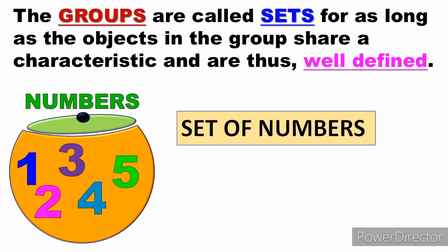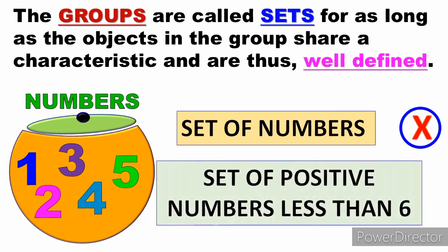For example, 'set of numbers' is not well-defined because there are many kinds of numbers — it could be 1 to 100, even numbers, or odd numbers. However, 'set of positive numbers less than 6' is well-defined because we can identify exactly which numbers belong: 1, 2, 3, 4, and 5.